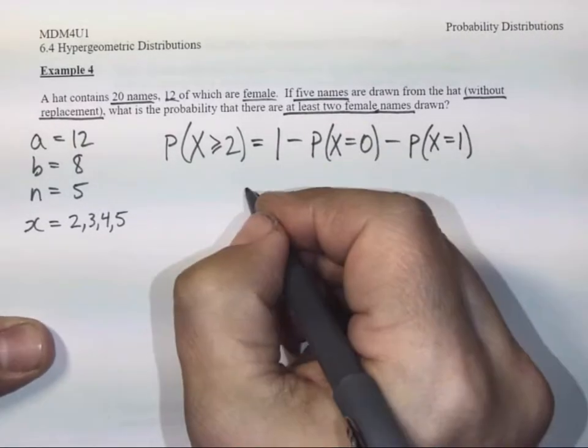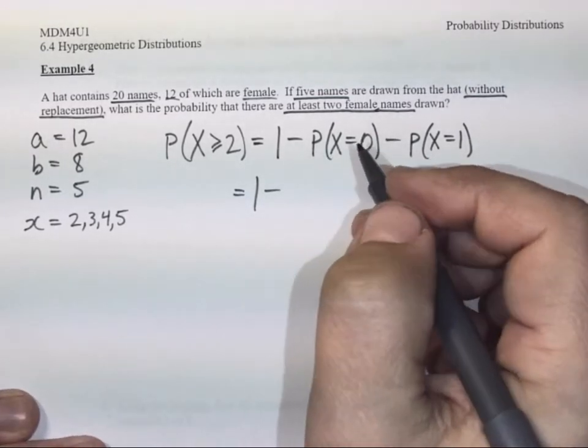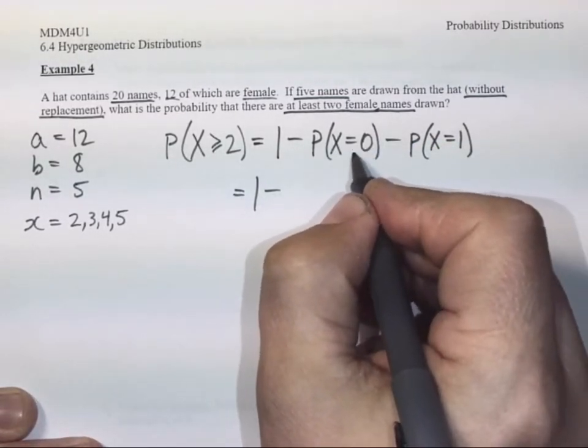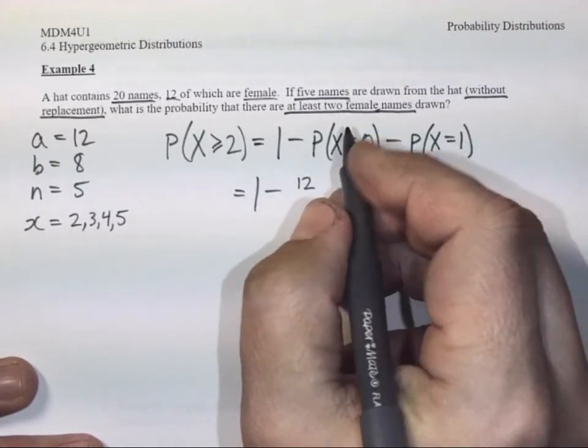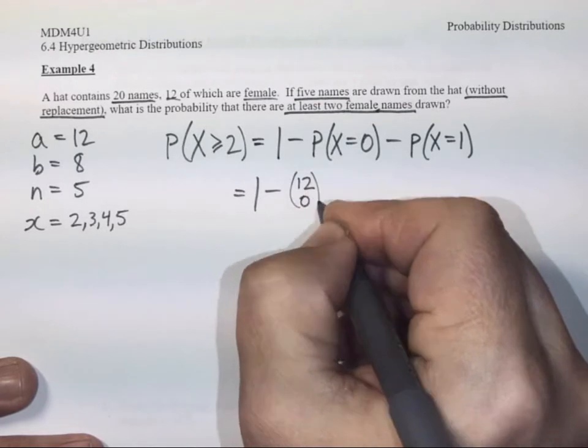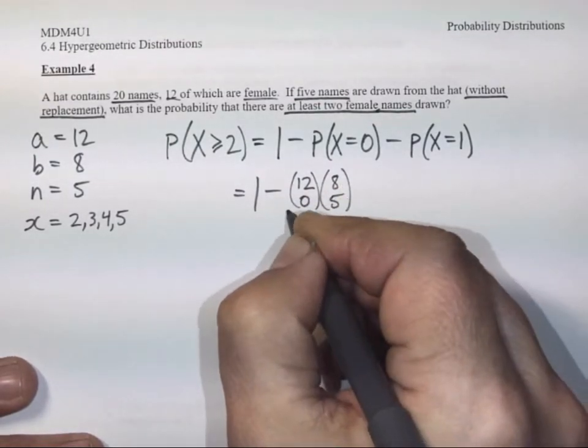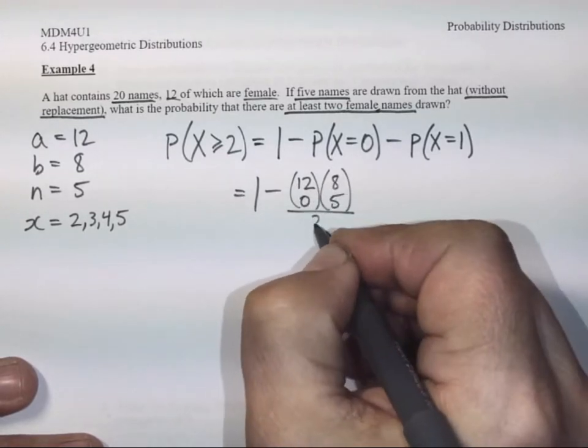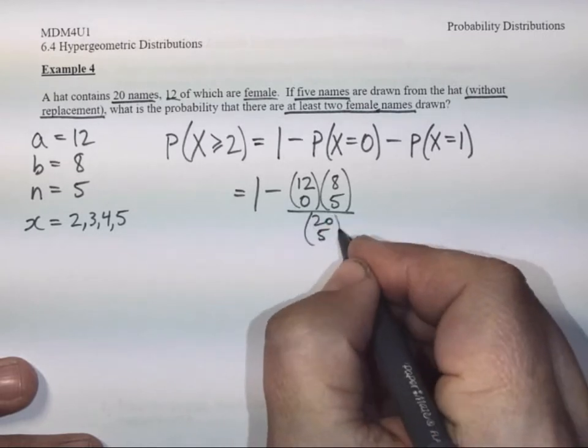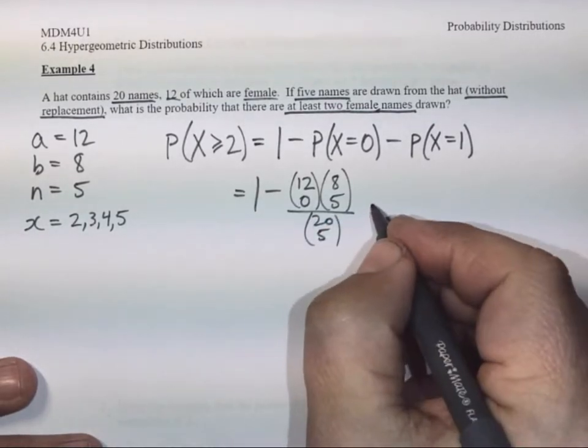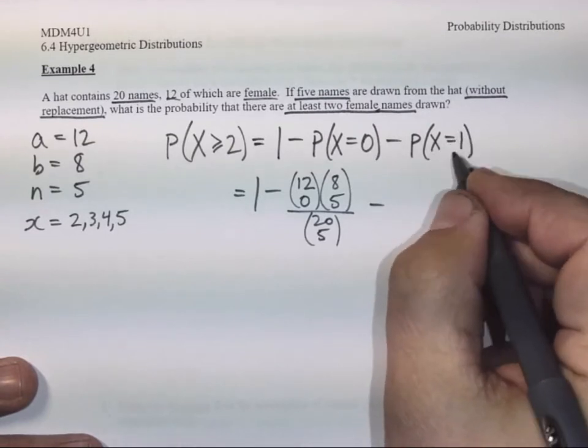Okay, let's calculate those two cases now. 1 subtract, what's the probability that we don't get any female names drawn at all? Well, out of the 12 female names, we chose none of them. Out of the 8 male names, we must have chosen all five. And out of the 20 names in the hat total, 12 plus 8 is 20, we needed to choose five names in general.